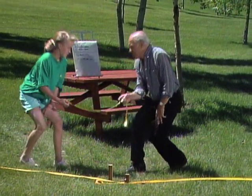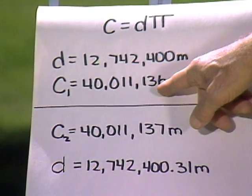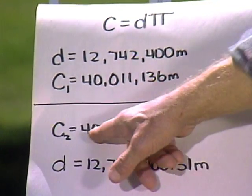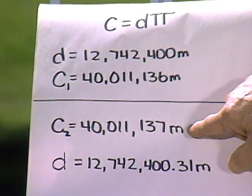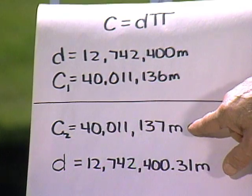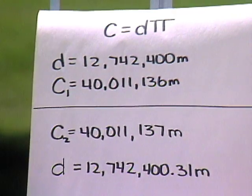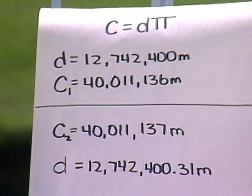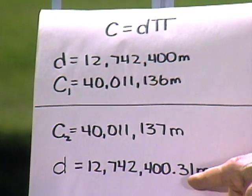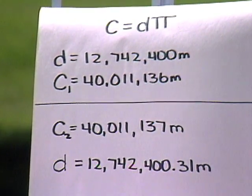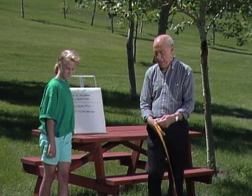Let's figure it out mathematically. Remember the circumference ended up with 136? See the new circumference: 40,011,137 — we've added one meter. Therefore this is the new diameter: 12,742,400.31 meters. That's 31 centimeters — the diameter. What would the radius be? Half that — 15.5 centimeters.